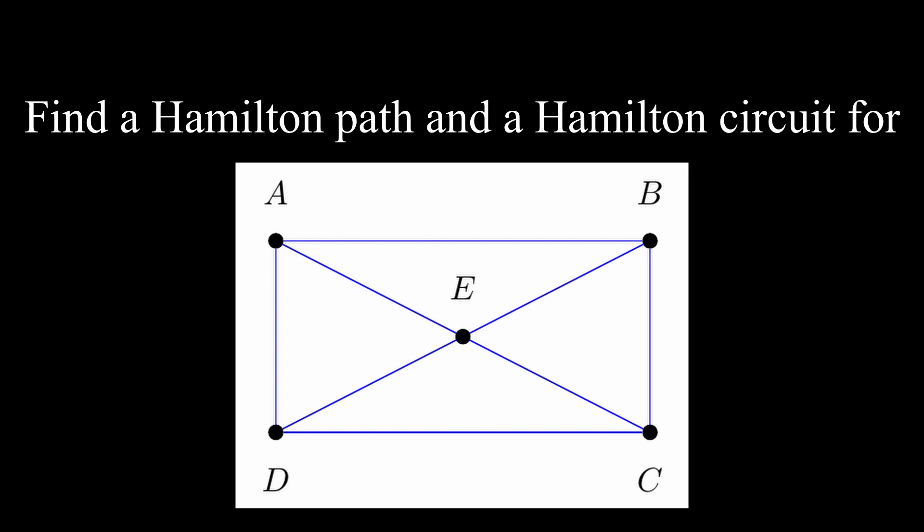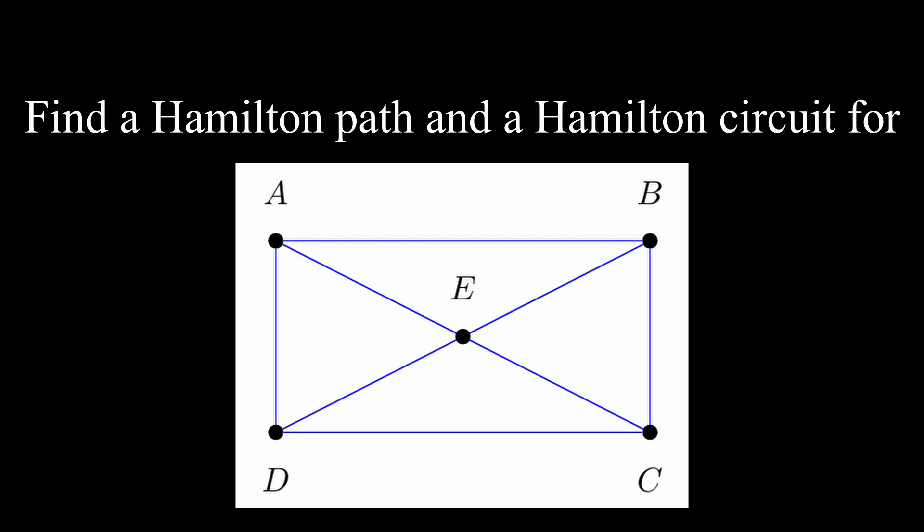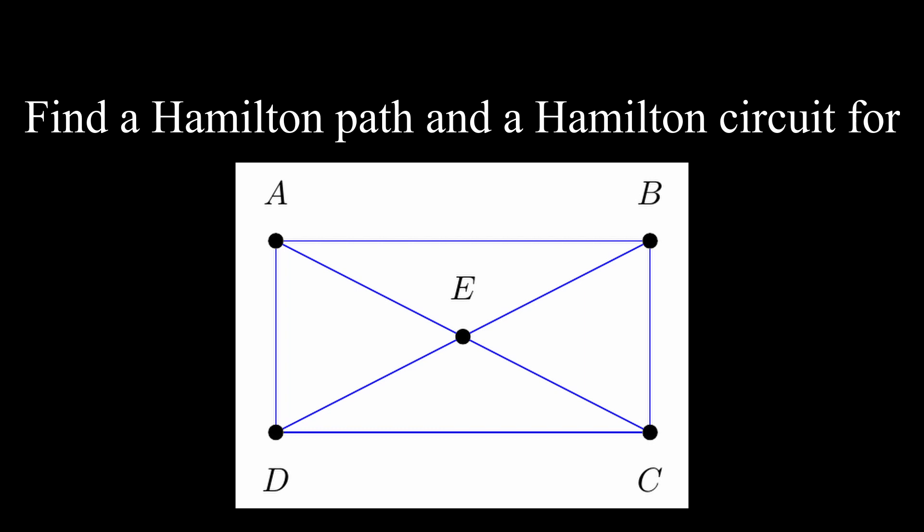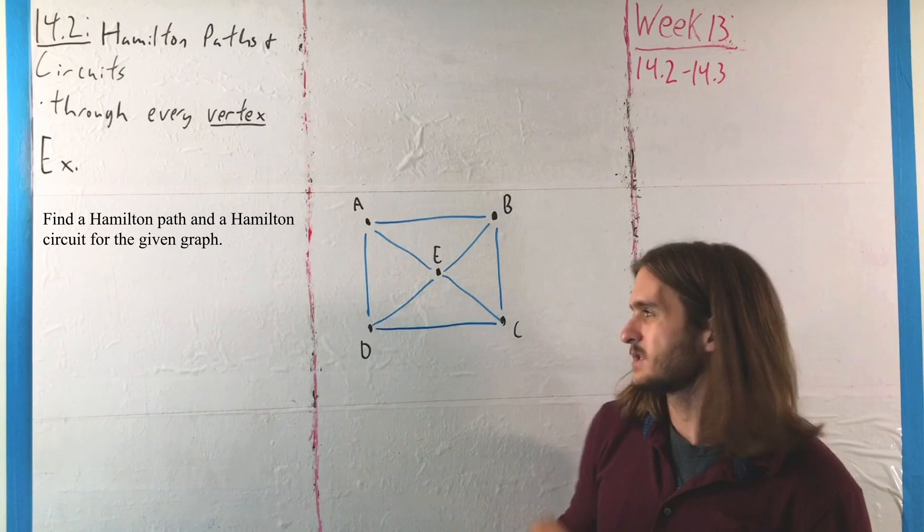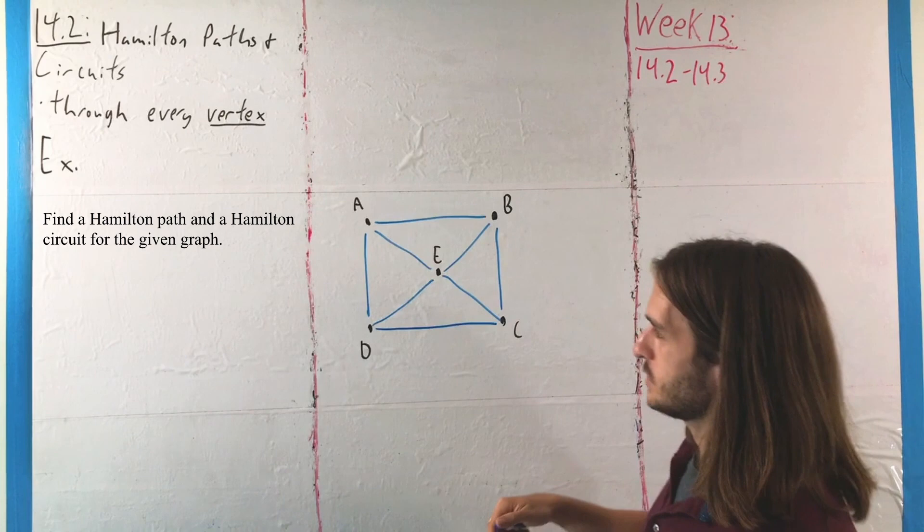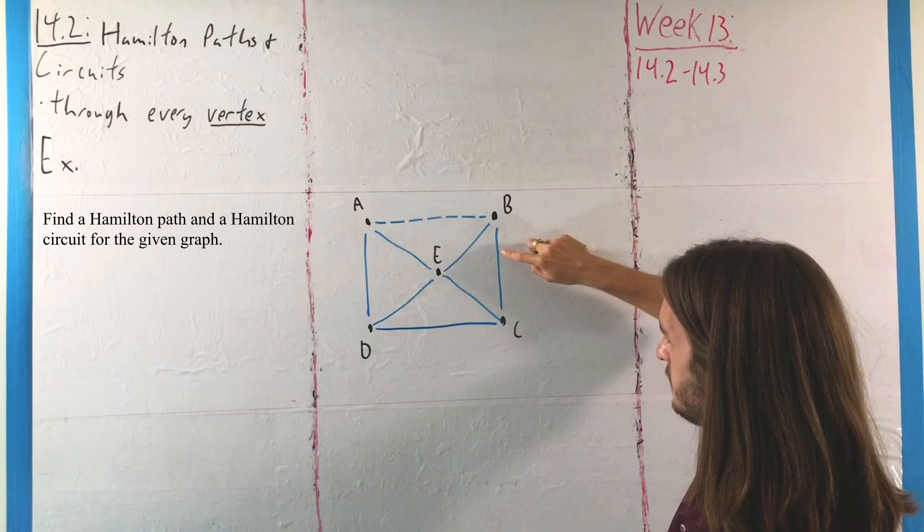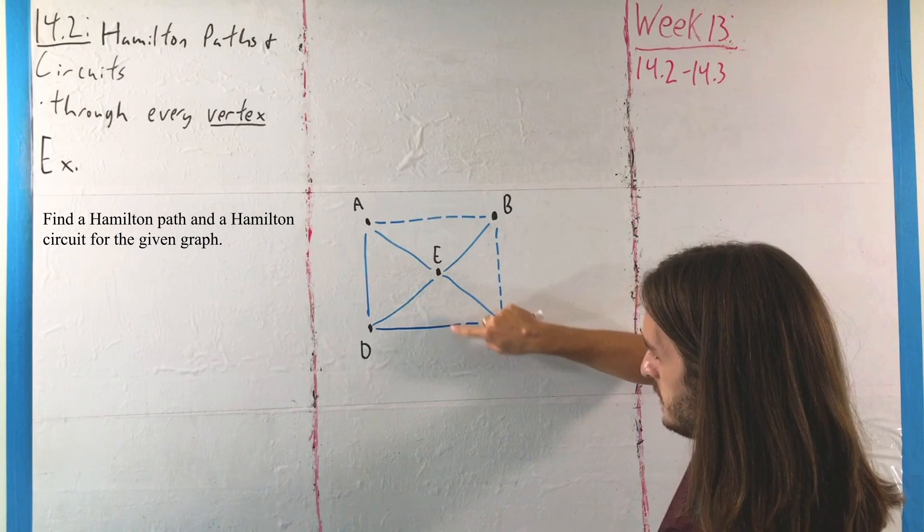So for this example, we want to identify a Hamilton path and a Hamilton circuit for the given graph below. And in this case, we actually have a ton of different examples for being able to find those constructions. One very easy one we can get here for a Hamilton path is to just think alphabetically. So if we take that first one up top, A to B, then go from B to C, then go from C to D, then go from D to E.